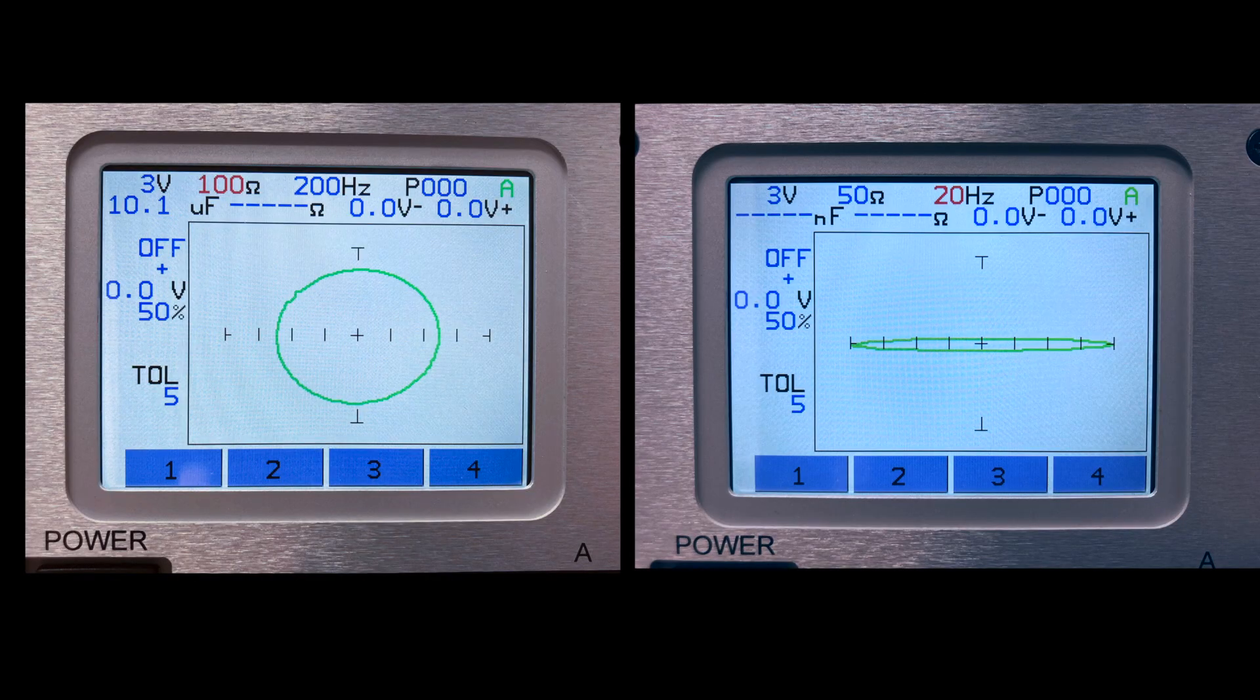This means that the tracker frequency setting becomes a factor when selecting the tracker range. The capacitive elliptical signature on the left provides a much better indication of the component health than the signature on the right. The difference between the two is the range settings.